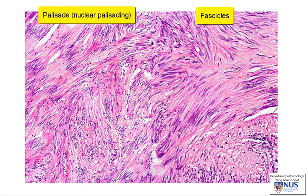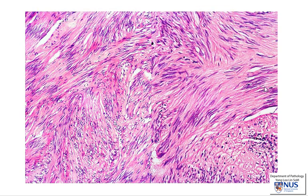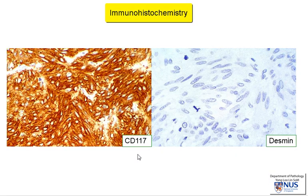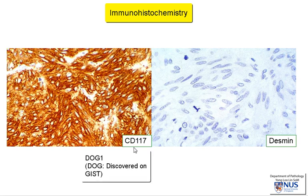Nuclear palisading can be seen in GISTs as well as schwannomas. Because these mesenchymal tumours can look fairly similar on microscopy, we do need some additional ancillary tests to tell them apart, and we employ immunohistochemistry for this. The two best and most specific markers for GISTs would be CD117 — you can see here it is very positive, with brown colour indicating a positive stain — and the other marker is DOG1, which is also very accurate, very sensitive, and rather specific for GISTs.